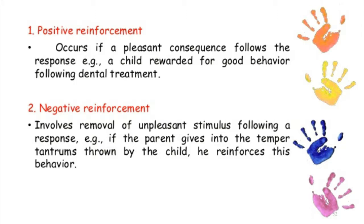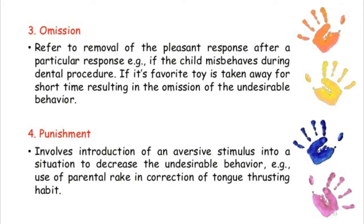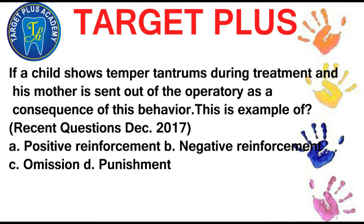Negative reinforcement involves removal of an unpleasant stimulus following a response. For example, if a parent gives in to temper tantrums thrown by a child, they reinforce this behavior. Omission is the removal of a pleasant stimulus after a particular response. For example, if a child shows temper tantrums during treatment and his mother is sent out of the operatory, or a favorite toy is taken away for a short time. Punishment is when an unpleasant stimulus is presented after a response — for example, if the dentist speaks in a raised voice to the child. The example of the child's mother being sent out of the operatory is an example of omission.